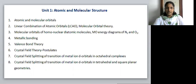Unit 1, Atomic and Molecular Structure. In this unit, we have 8 lessons. First lesson is Atomic and Molecular Orbitals. Second lesson is LCAO and MOT. Third lesson, Molecular Orbitals of Homonuclear Diatomic Molecules like Nitrogen and Oxygen. Fourth lesson is Metallic Bonding. Fifth lesson is Valence Bond Theory. Sixth lesson is Postulates of Crystal Field Theory. Seventh lesson is Crystal Field Splitting in Octahedral Complexes. And last lesson is the Crystal Field Splitting in Tetrahedral and Square Planar Complexes.